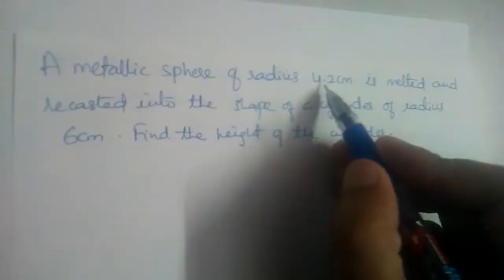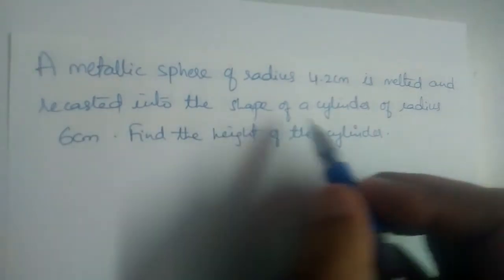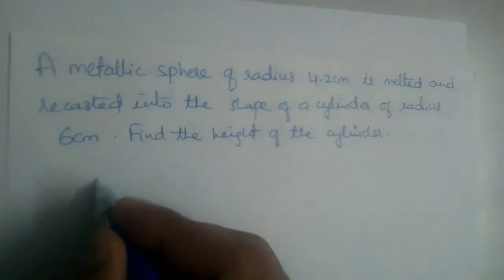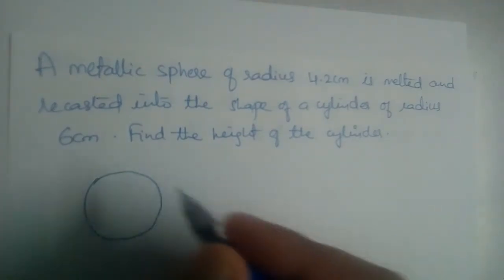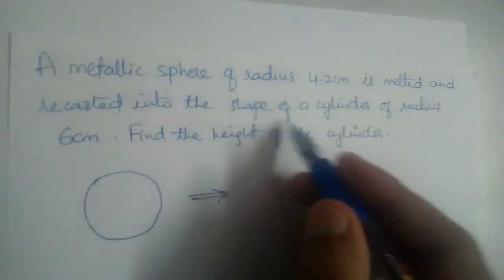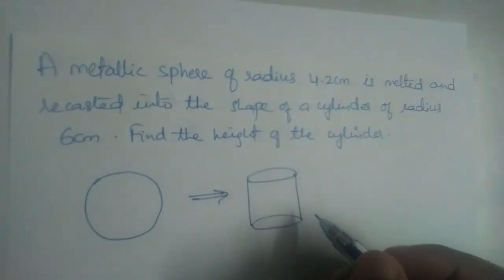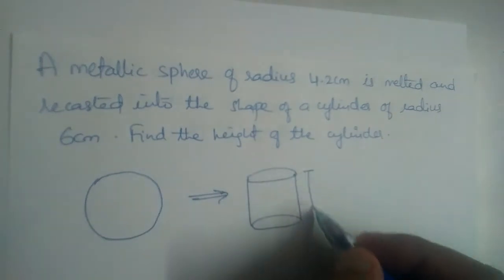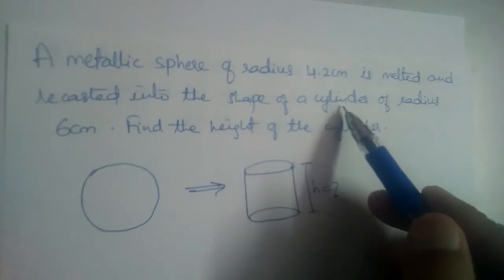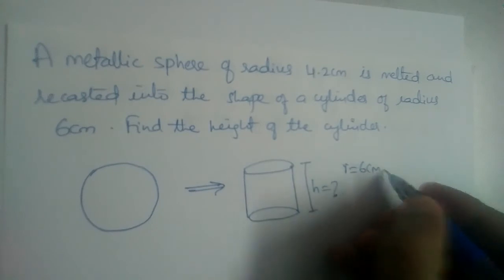A metallic sphere of radius 4.2 cm is melted and recasted into the shape of a cylinder of radius 6 cm. The sphere is melted and recasted into the shape of a cylinder. So the radius of the cylinder is 6 cm.